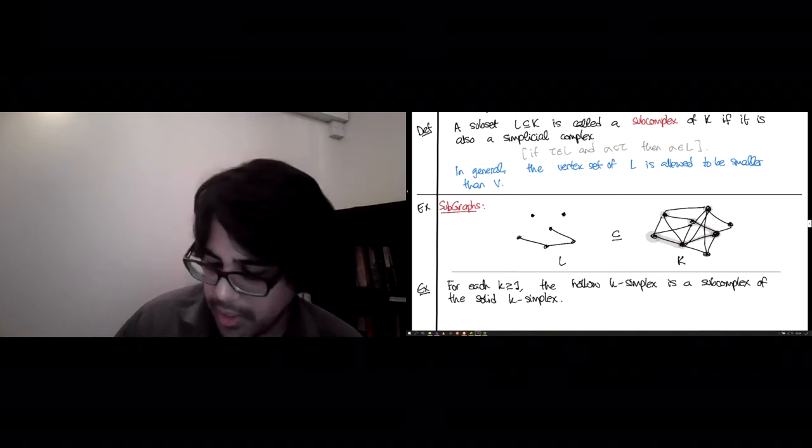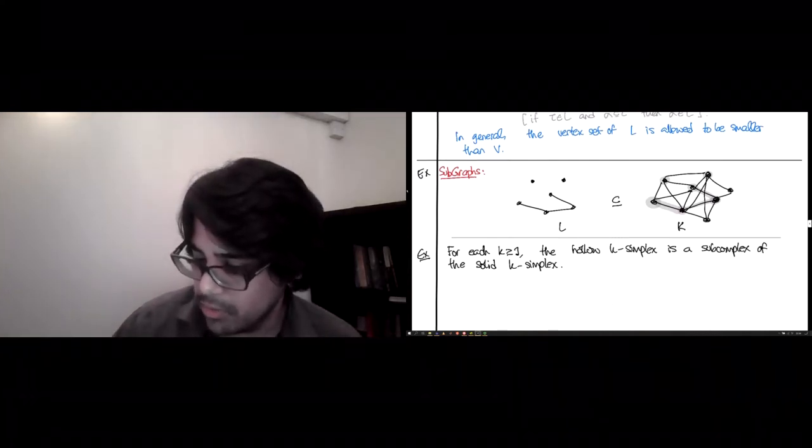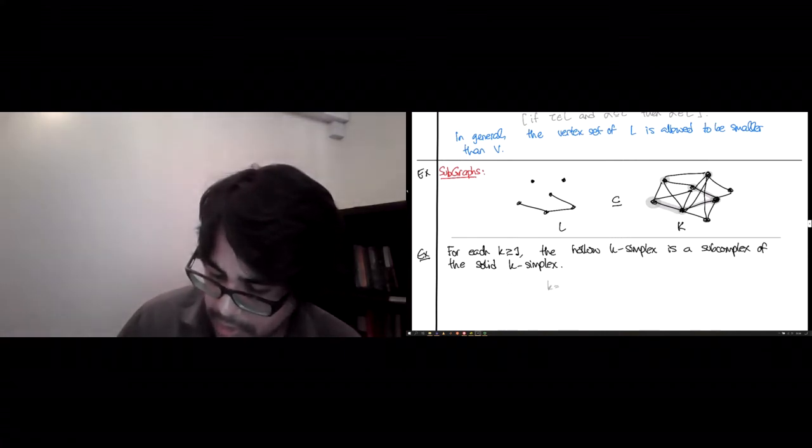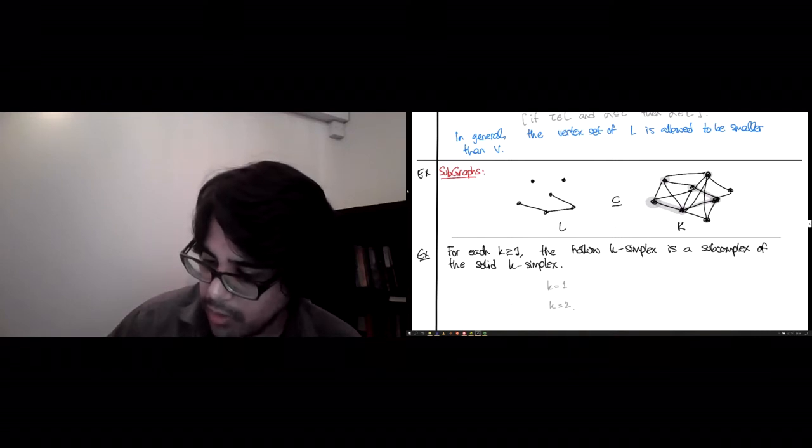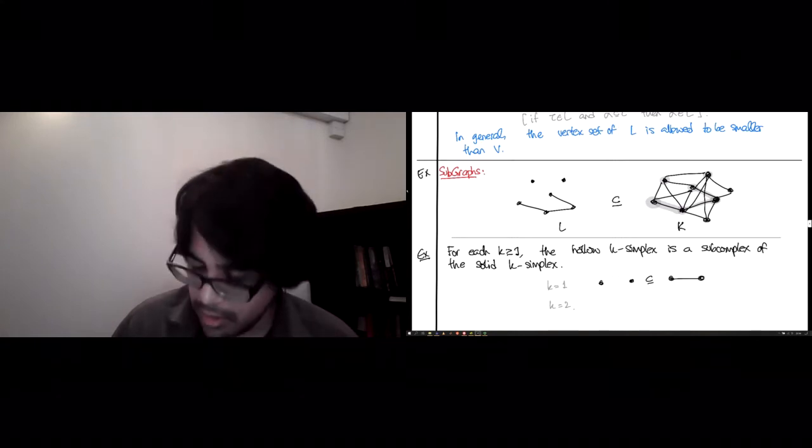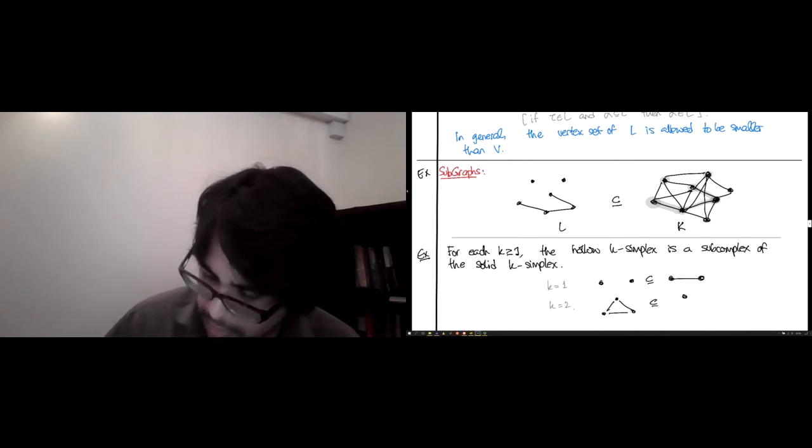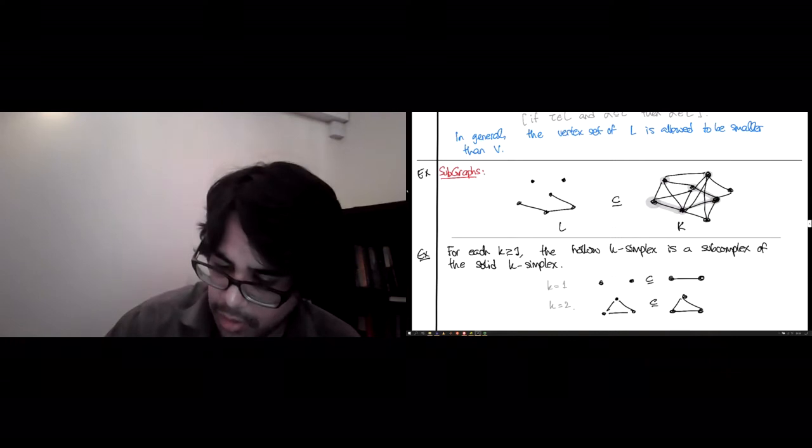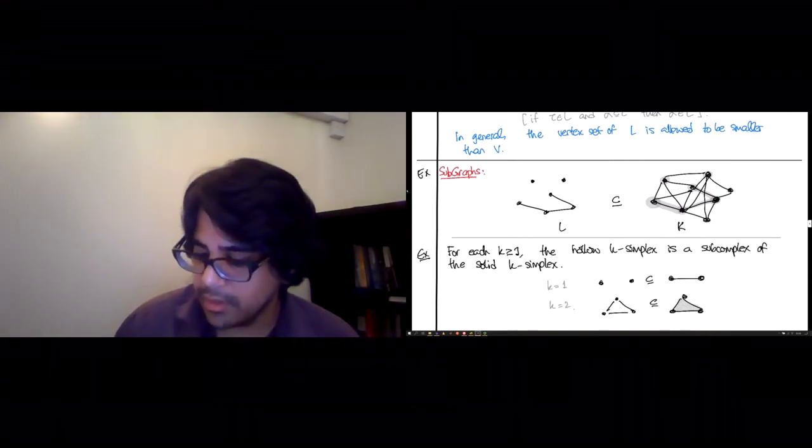And in this particular case, it turns out that the vertex sets are the same. So let's do the two easy to draw examples, K equals 1 and K equals 2. For K equals 1, what I'm saying is that this is a subcomplex of that, which again makes sense. You have two simplicial complexes and one sits inside the other.